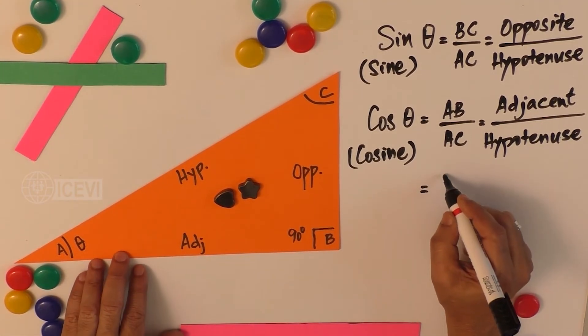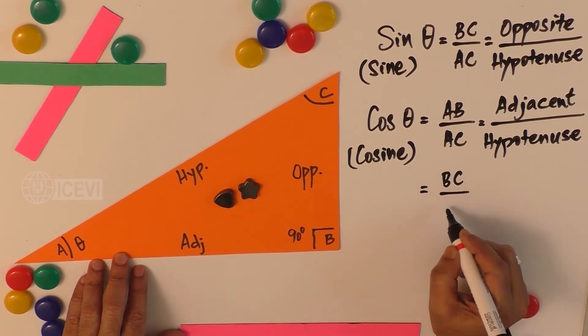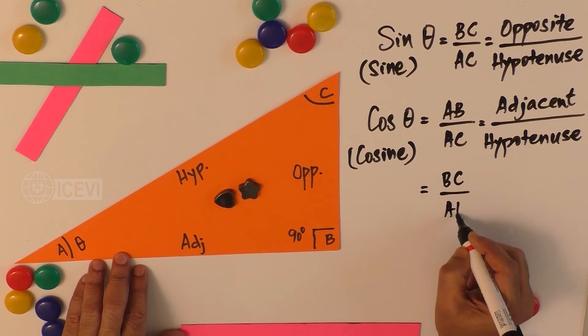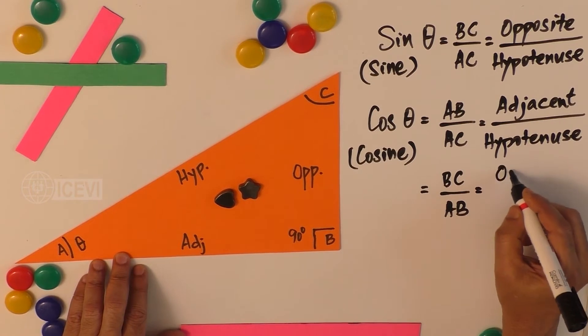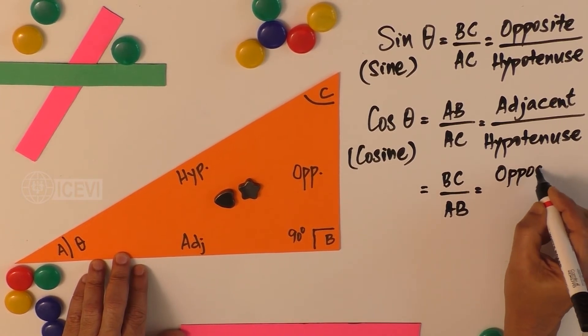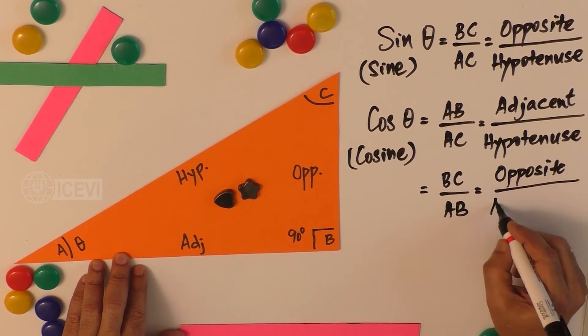So what we do, let us take BC by AB. What is BC by AB? This is nothing but opposite divided by adjacent.